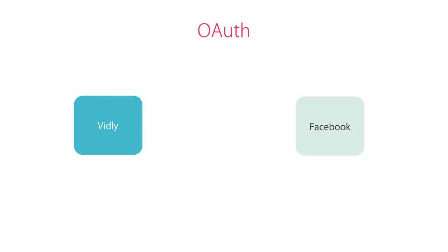Now, John wants to log in. When he clicks on Facebook login on our website, we will redirect him to Facebook and we'll use our API key and secret, so Facebook knows this request is coming from Vidly. To prevent a malicious user from finding our secret, we use HTTPS, or secure HTTP protocol. So the data exchange between these parties will be encrypted and no one can intercept this communication.